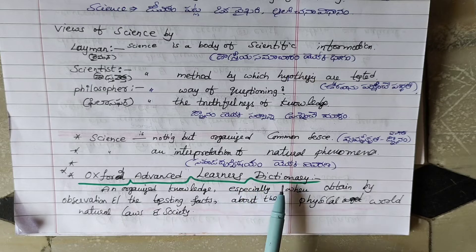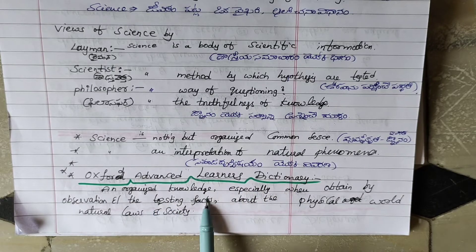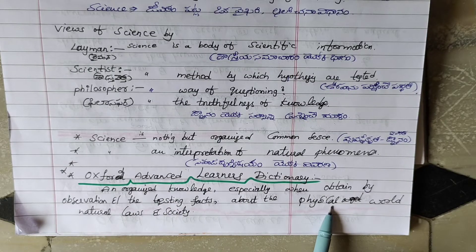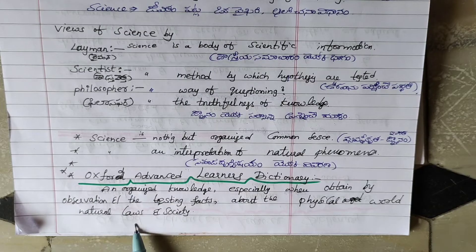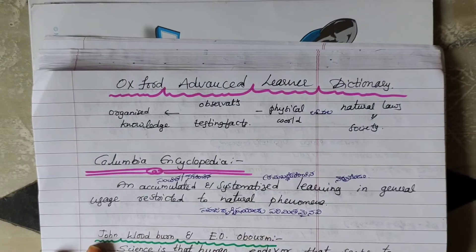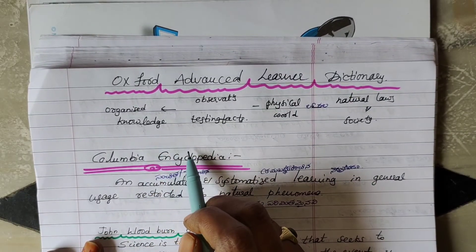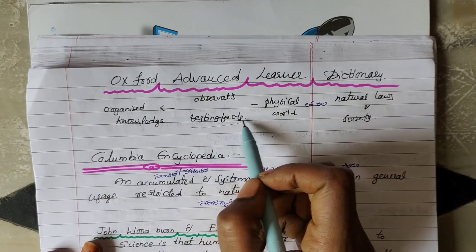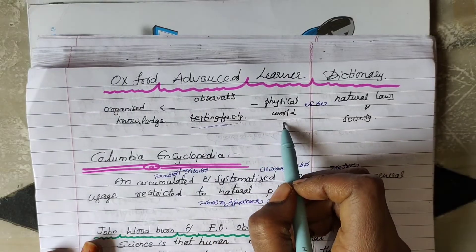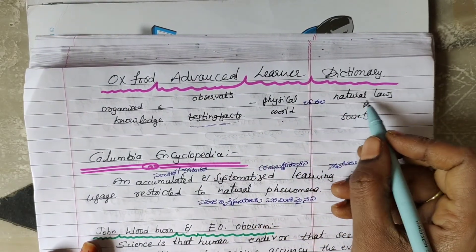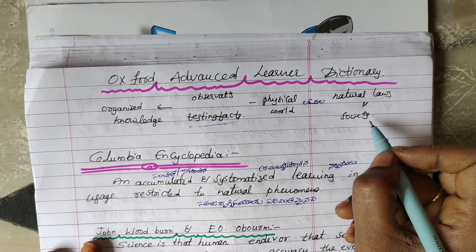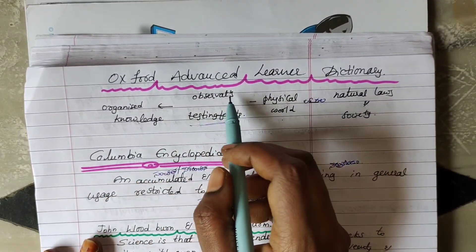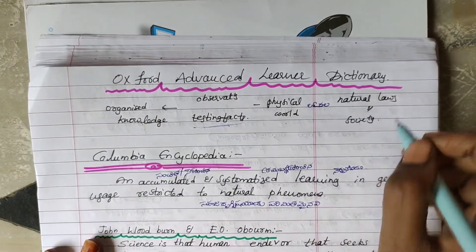According to the Oxford Advanced Learner's Dictionary, science is organized knowledge especially when obtained by observation and the testing of facts about the physical world, natural laws and society. What is science? Organized knowledge obtained through observations — we test the physical world, natural laws, and society.